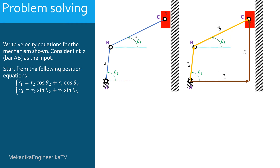In this problem, it is asked to derive the velocity equations of the slider crank mechanism shown here. It is considered that link 2 is the input. The position equations are given here, and it is asked to derive the velocity equations using the given position equations.